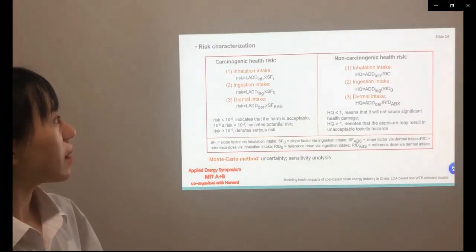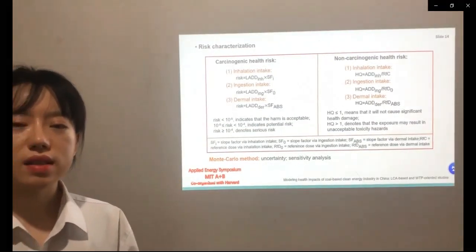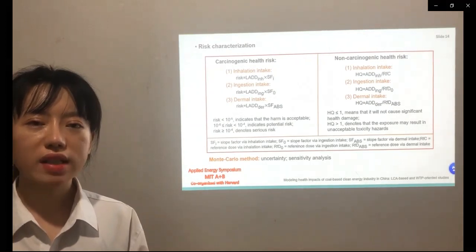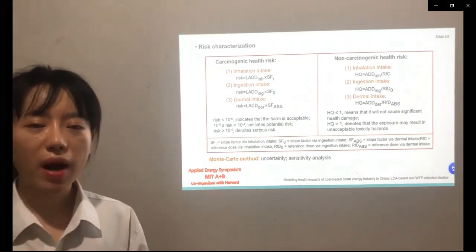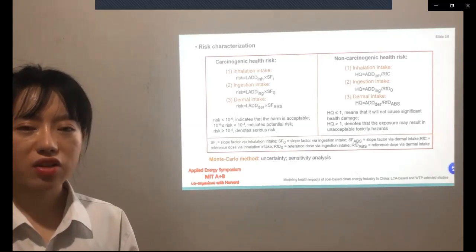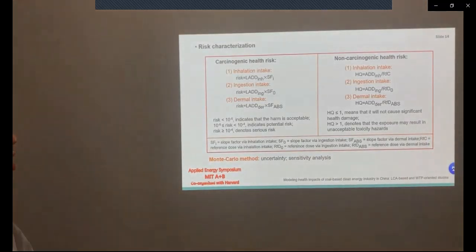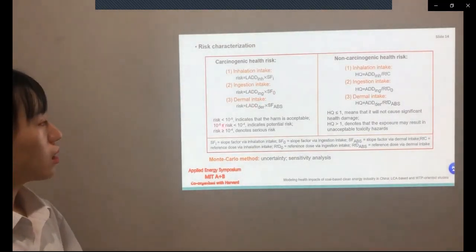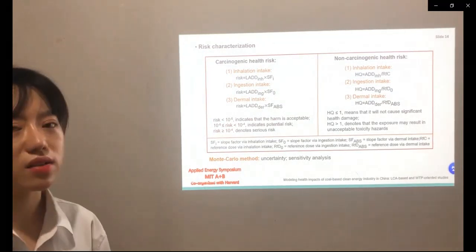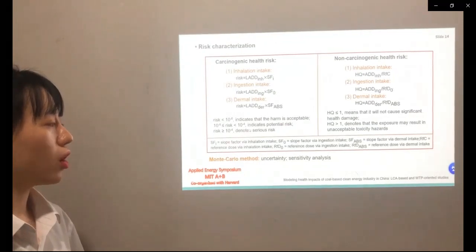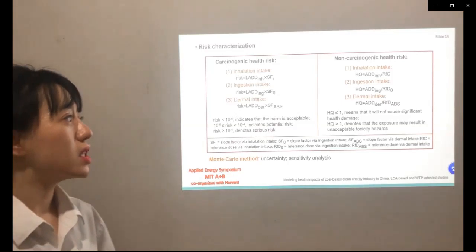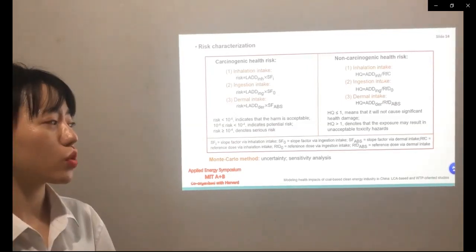The next step is risk characterization. As is known to us all, health risks induced by environmental pollution can be divided into carcinogenic and non-carcinogenic health risks. Therefore, we discuss them separately as well. We use the risk criteria proposed by the U.S. Environmental Protection Agency. For example, for carcinogenic health risks, if the risk is less than 10 to the power of minus 6, indicating that the health is acceptable. If the risk is greater than 10 to the power of minus 6 but less than 10 to the power of minus 4, indicating that it is a potential risk.